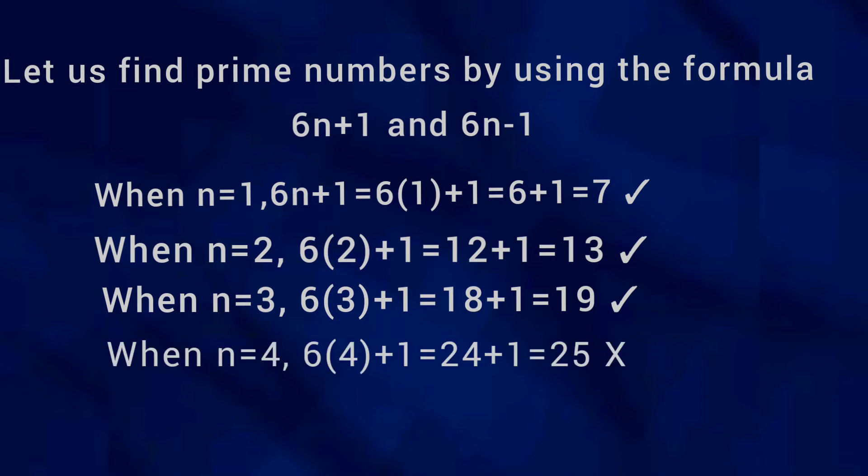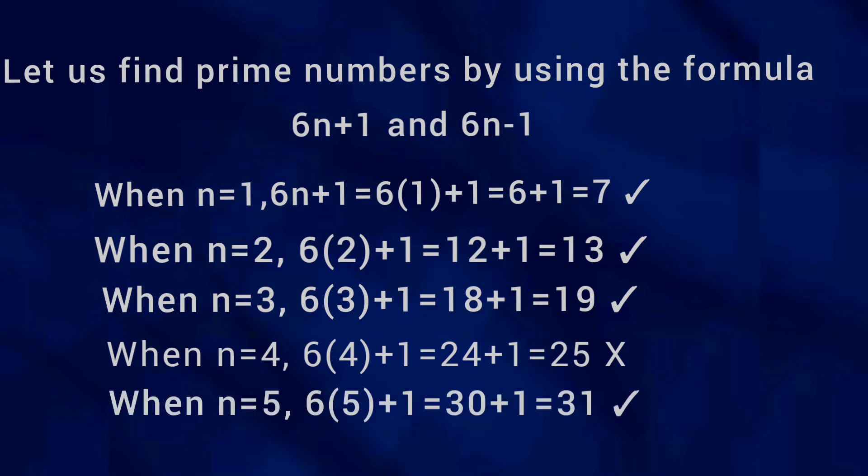When n = 4, 6 × 4 + 1 = 24 + 1 = 25. However, 25 is not a prime number as it is a multiple of 5. When n = 5, 6 × 5 + 1 = 30 + 1 = 31, and 31 is also a prime number.